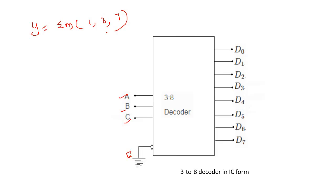Using the decoder in IC form, we can implement Boolean functions. For example, Y = sigma m(1, 3, 7) can be implemented by connecting the corresponding minterm outputs of the decoder through an OR gate.